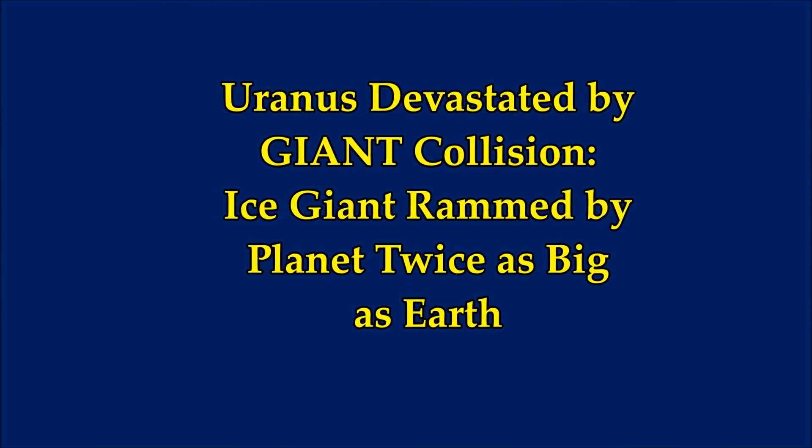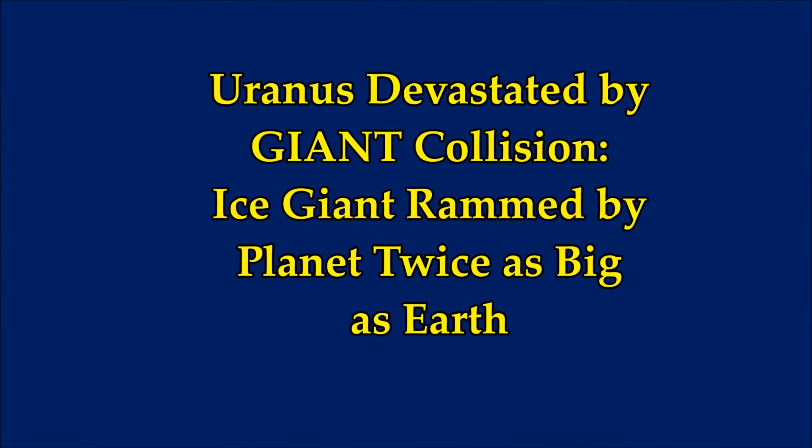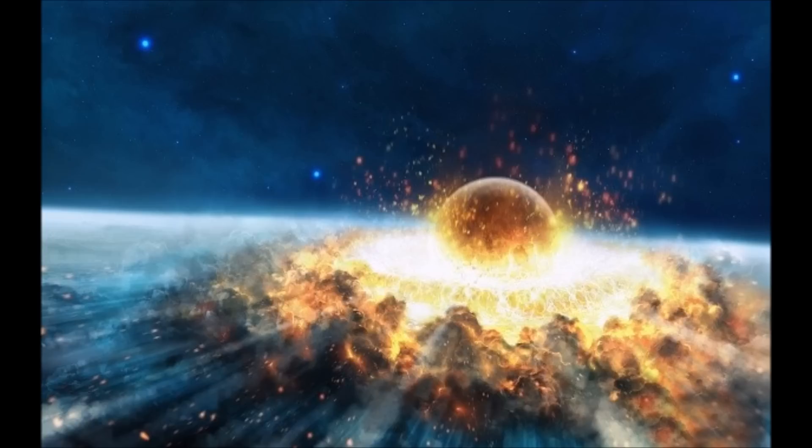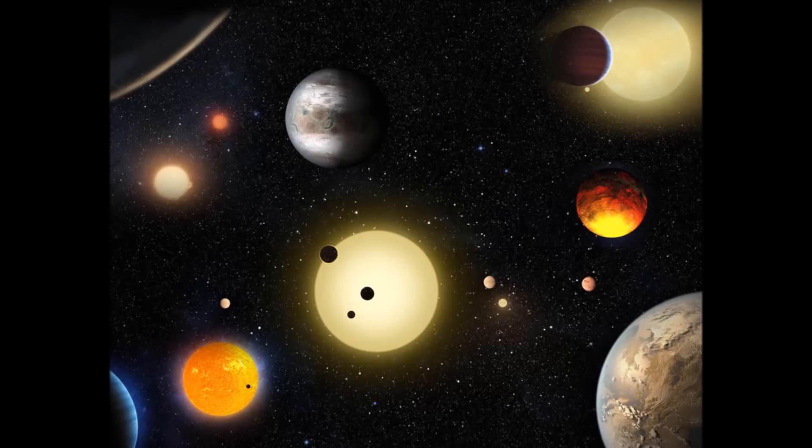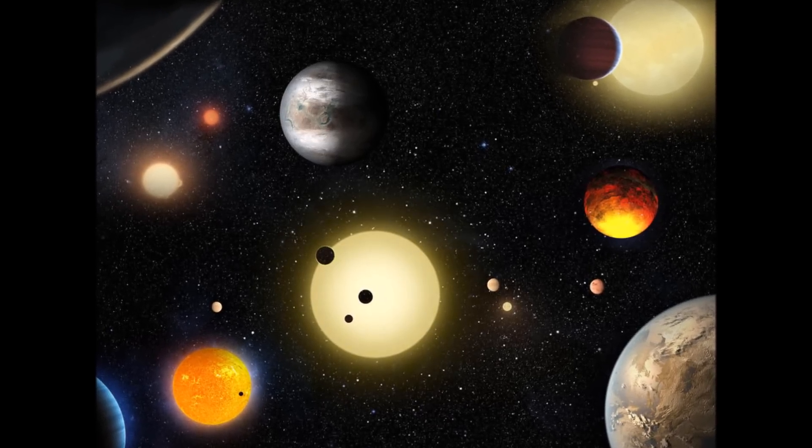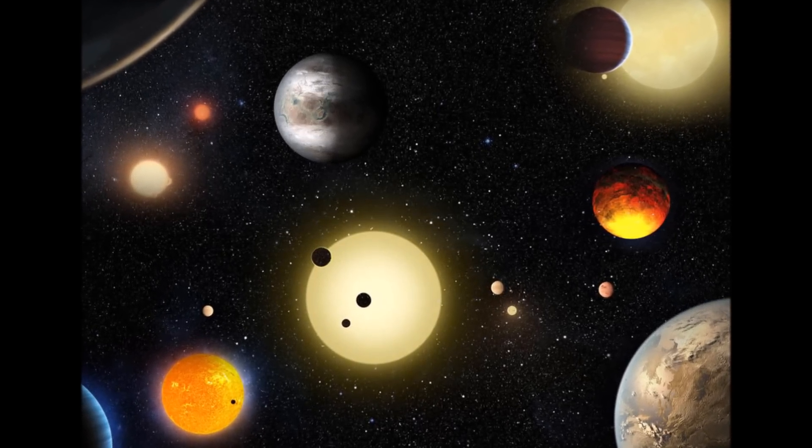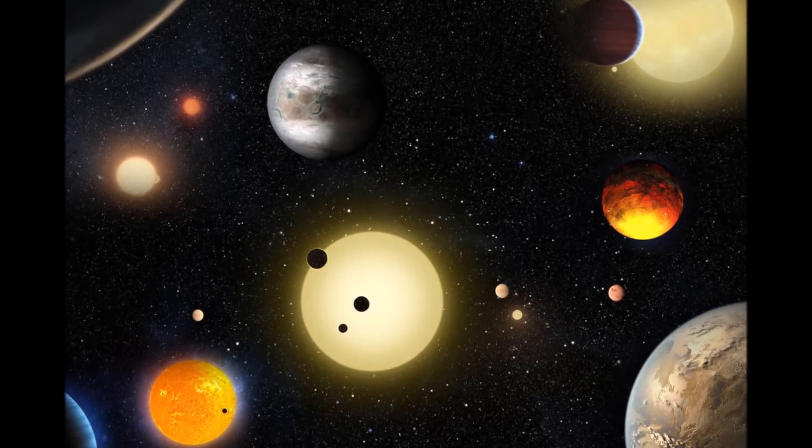Ice giant Uranus was rammed by a planet twice as big as Earth. Uranus took a hit of cosmic proportions when a planet twice the size of Earth crashed into this giant billions of years ago. Sebastian Kentley of Express UK reports on this.